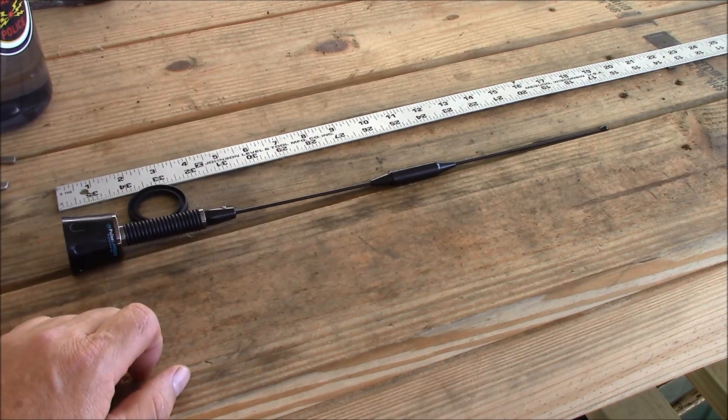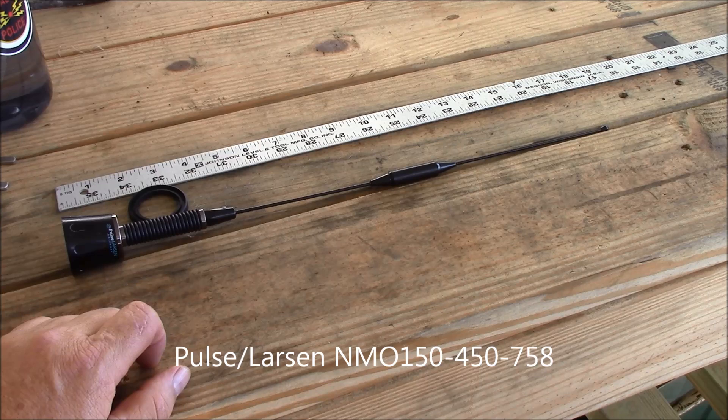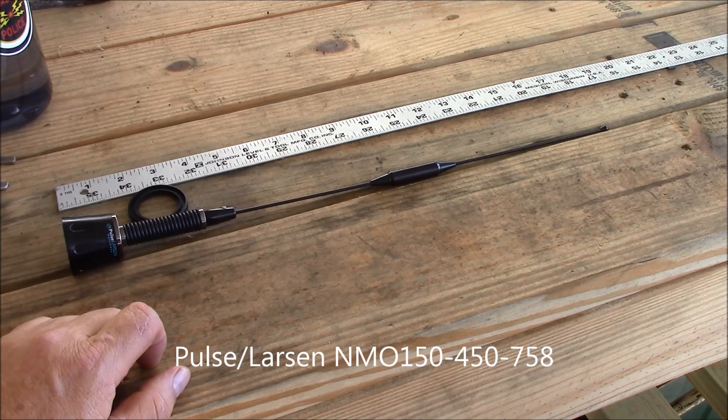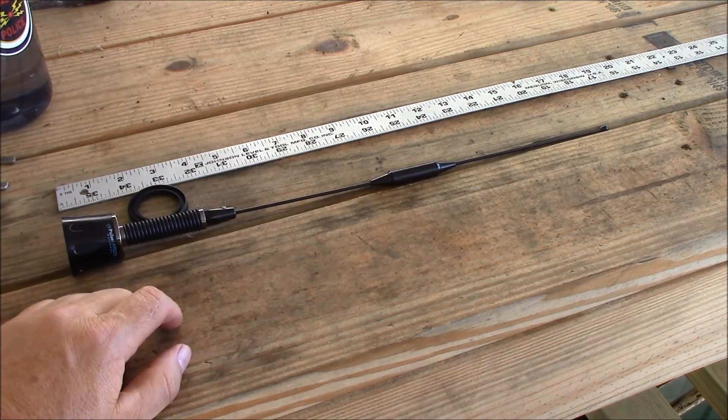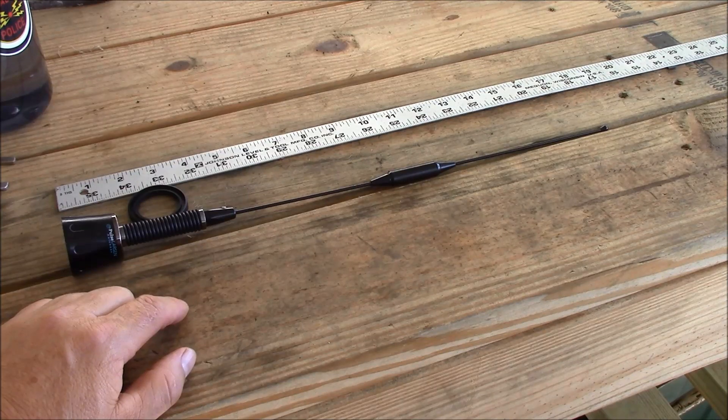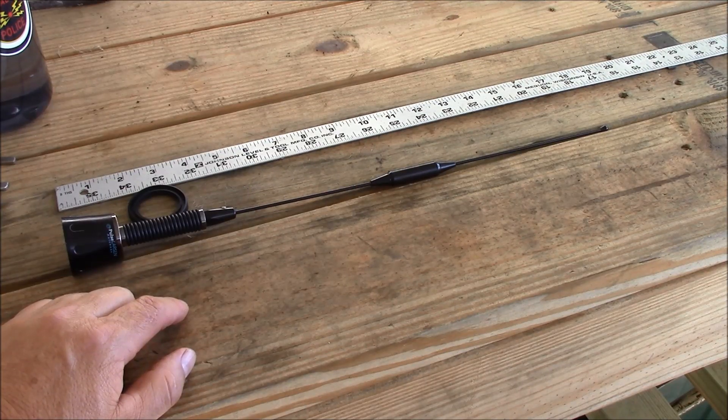The antenna we have on the bench here is a Pulse Larsen NMO150-450-758. This is a tri-band antenna that covers the VHF, UHF,